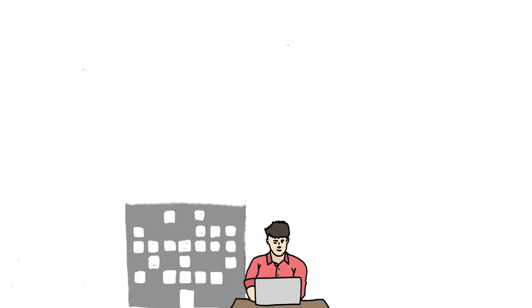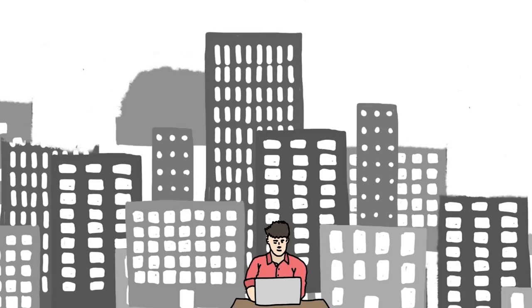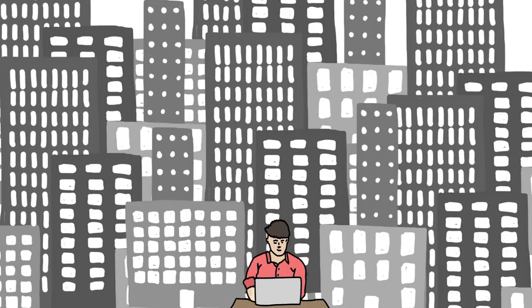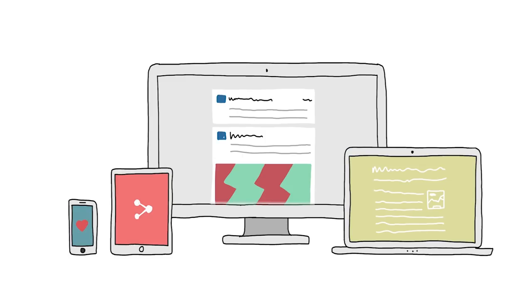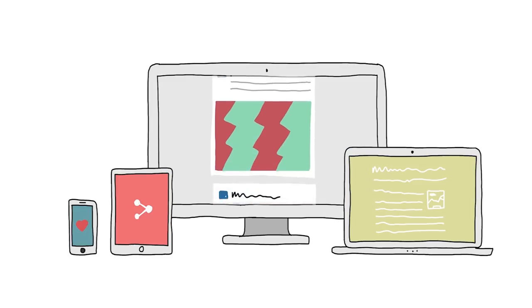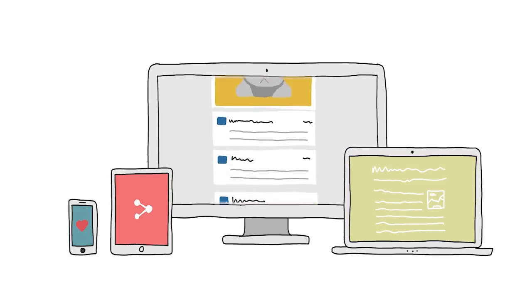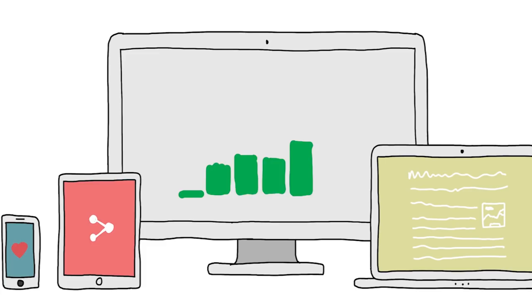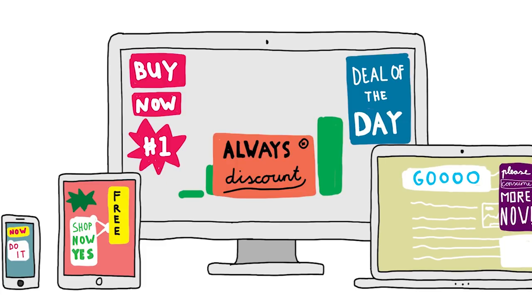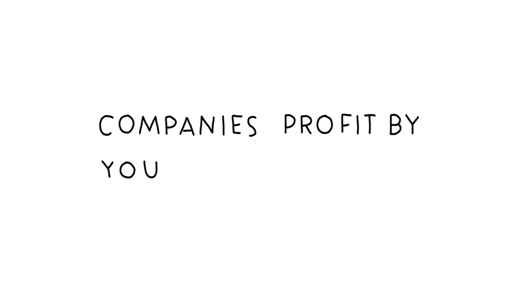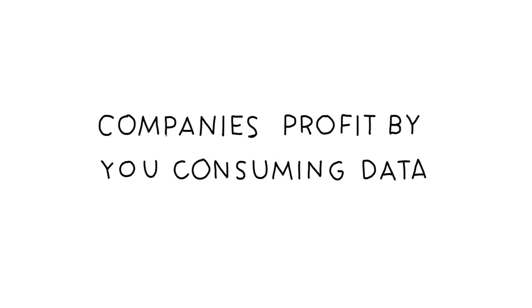Some of the biggest companies in the world are making money on your data. So they want you to spend as much time on their platform as possible. They want you watching that screen — all of them. Share, like and read. They developed special algorithms just so you keep scrolling your feed, all to increase their stats and have you watching more ads. Simply because companies make profit by you consuming data. And there is a growing massive industry behind this business.